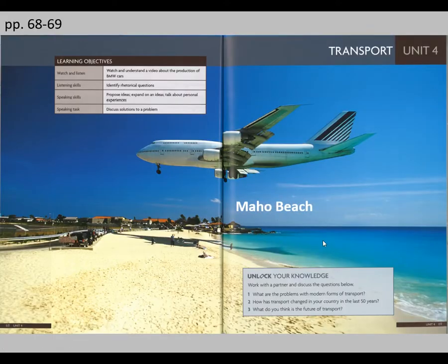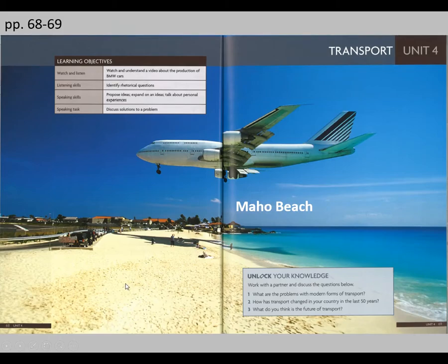Look at this picture. This beach is called Maho Beach. Something is special about Maho Beach — it is very close to an airport, and the airplanes have to fly very close to the beach to land at the airport. This attracts many people. A lot of people come to this beach to take a selfie when an airplane is approaching the airport.